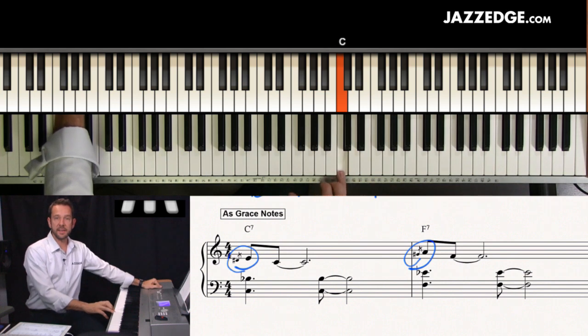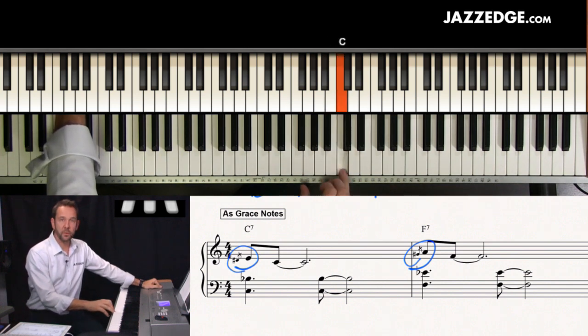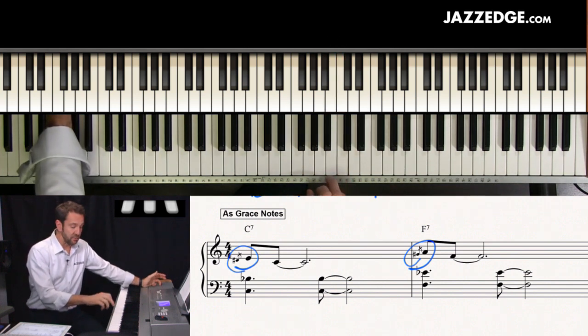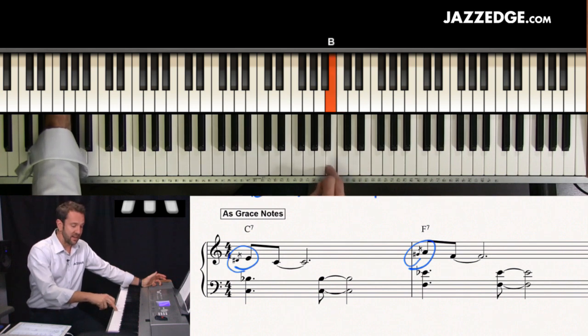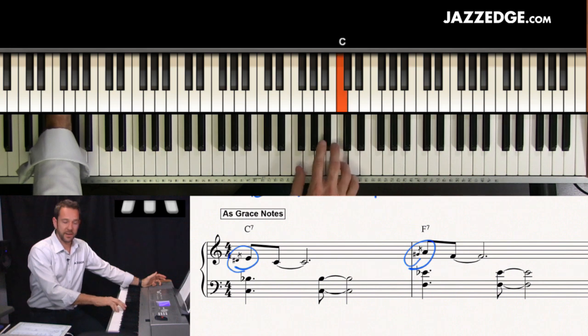Now, here on the F, when I go to the sharp four to the five, obviously I can't use the same finger because I can't slide from a white note to a white note like that. So that's where I'm going to have to use different fingers.